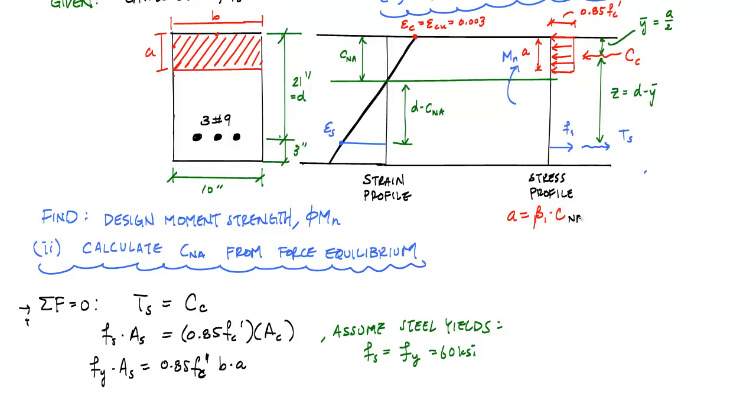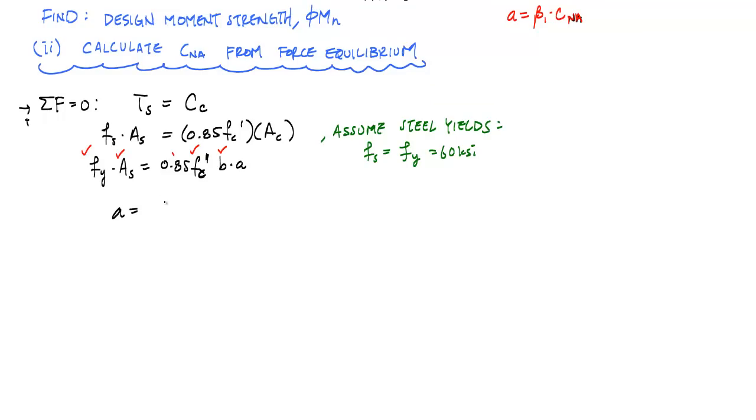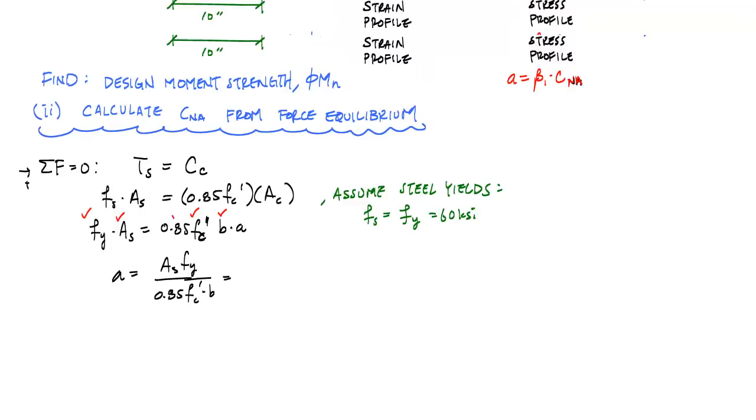Now, we're going to make an assumption here to calculate the neutral axis. We're going to assume the steel yields. And when we assume the steel yields, that means F S is equal to F Y, or in this case, grade 60 steel of 60 KSI. So here, this F S is F Y A S, which is equal to 0.85 FC prime, and I know that the area in compression is B times A. Right here, I can solve for A now because I know F Y A S and 0.85 FC prime and B.